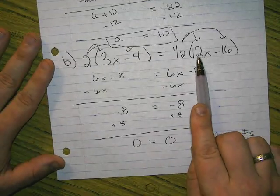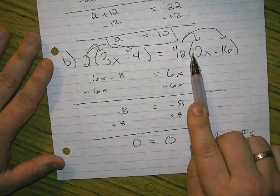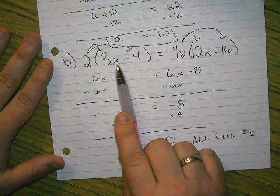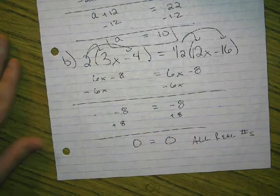Like I could plug in 1, that's going to give me 12 minus 16 is negative 4, half of that's negative 2. Over here, that would give me 3 minus 1 is negative 1, times 2 is negative 2. Hey, that works.